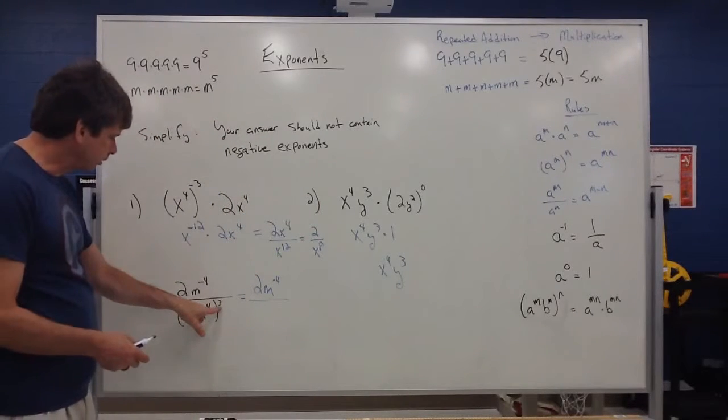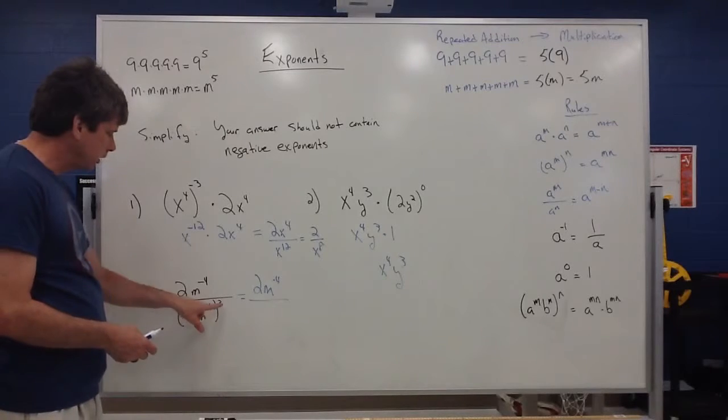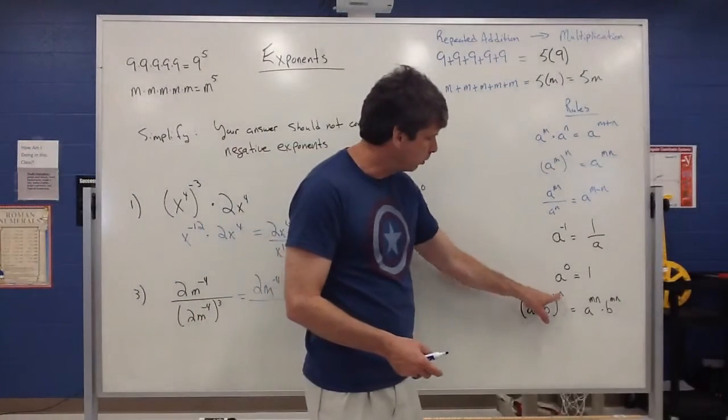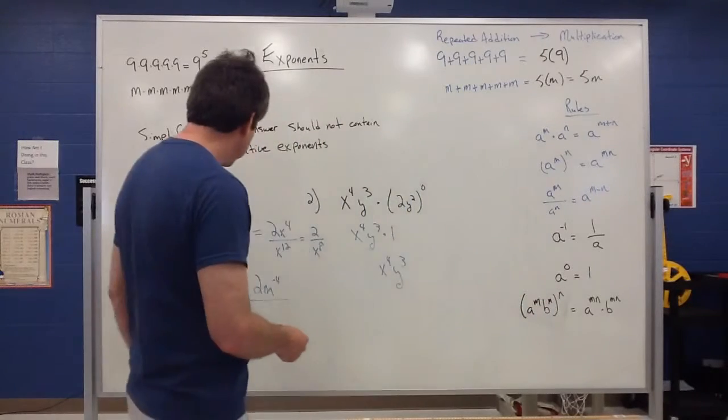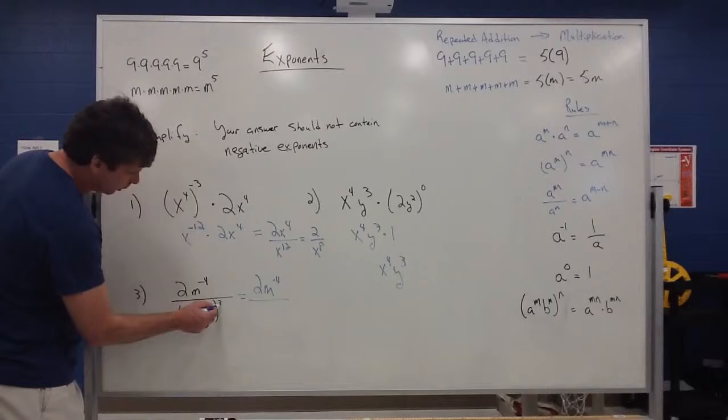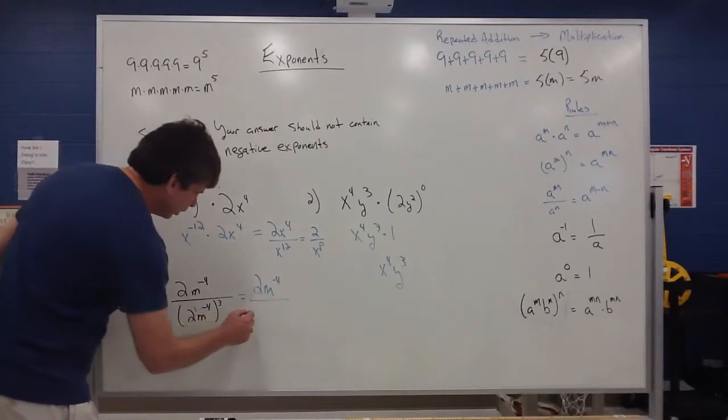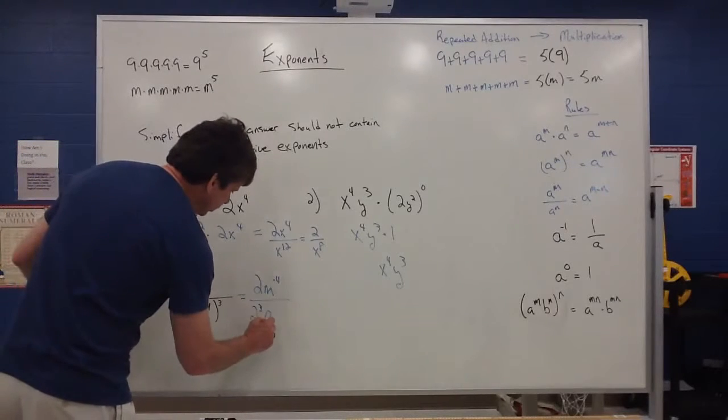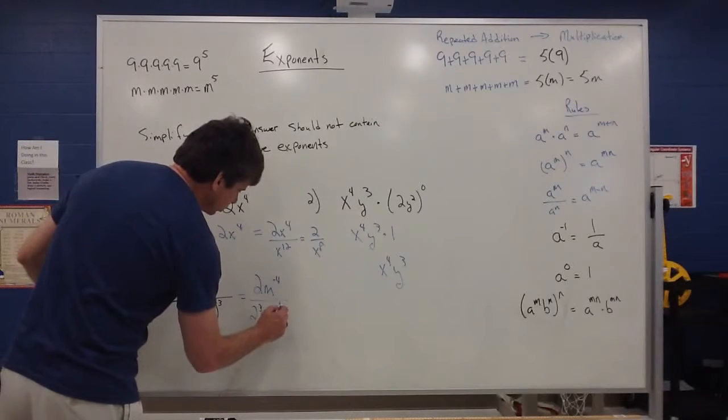And I know that since you have a power on the outside and there's two things on the inside this power goes to both pieces. So it's kind of like this property. You multiply it to both levels. Remember when there's a 2 there it's understood to have an exponent of 1. So that 3 times 1 makes that then a 2 to the third power and then 3 times negative 4 would be m to the negative 12.